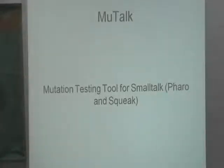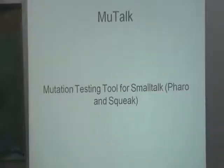We have a tool to help us do this — the first tool for Smalltalk on mutation testing, which we call Mutal. It's a mutation testing tool for Smalltalk. I'm going to show you a demo. This is the mutation testing runner, similar to the test runner. You select the category of classes you want to run the mutation against, then select the classes, then the tests you want to run, and then the mutant operators you want to run.